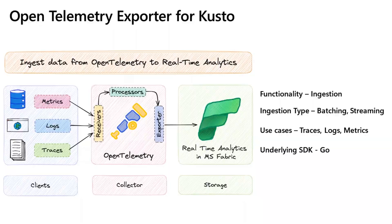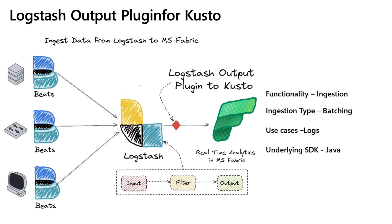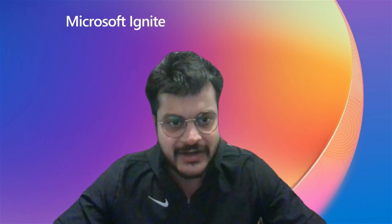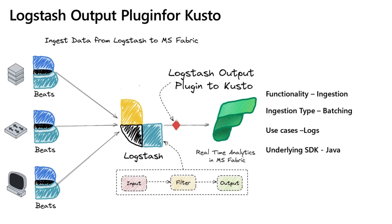The OTel exporter to Kusto is based on the Kusto Go SDK. For organizations on ELK stack, migration between big data platforms sounds like a long and complicated process, but that's not always true. Switching from ELK to real-time analytics offers the opportunity to significantly boost performance, reduce cost, and improve the quality of insights by offering advanced query capabilities — all without a long and complex migration, thanks to the Logstash Kusto plugin. The Logstash plugin enables you to process events from Logstash into KQLDB for later analysis and can ingest data from many sources simultaneously. The plugin is based on Kusto Java SDK and supports batching.